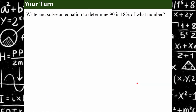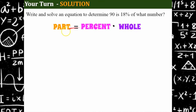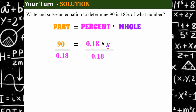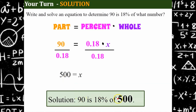One more — write your equation, solve, and come back to check your work. Our percent equation: the part is 90, equal to 18 percent written as a decimal (0.18), multiplied by the unknown whole x. To solve for x, divide both sides by 0.18. 90 ÷ 0.18 = 500. So my solution is that 90 is 18 percent of 500.